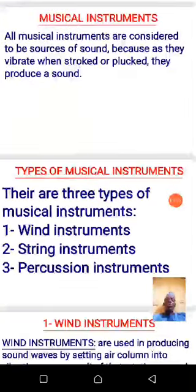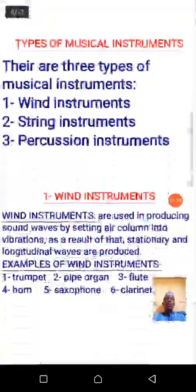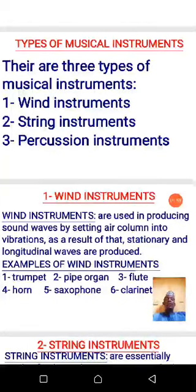All musical instruments are considered to be sources of sound because as they vibrate — when struck or plucked — they produce a sound. Musical instruments have been categorically divided into three types: we have the wind instruments, the string instruments, and the percussion instruments.